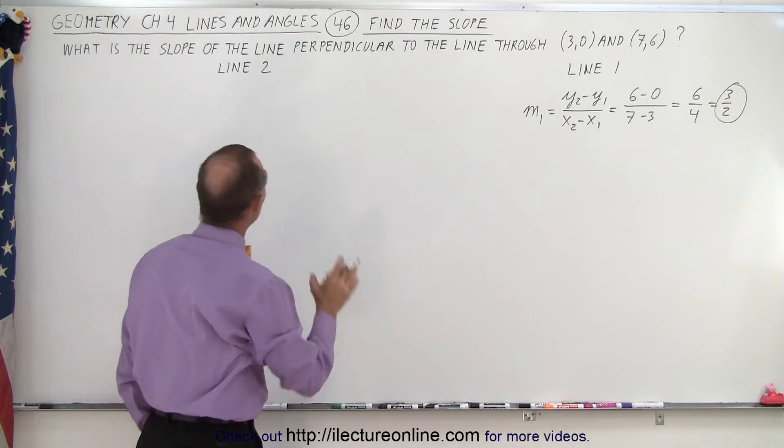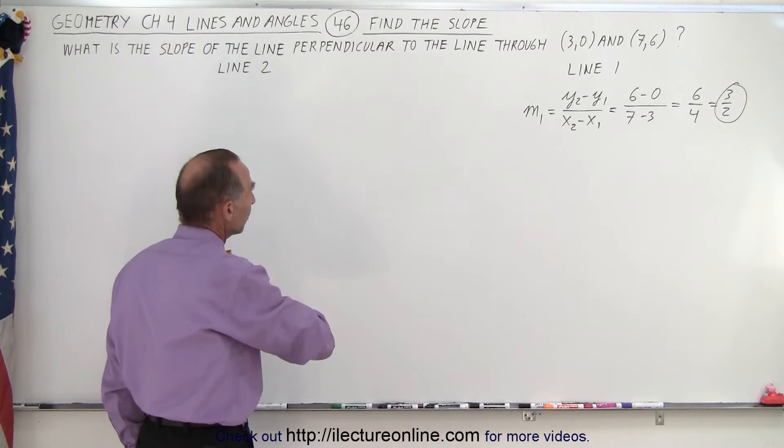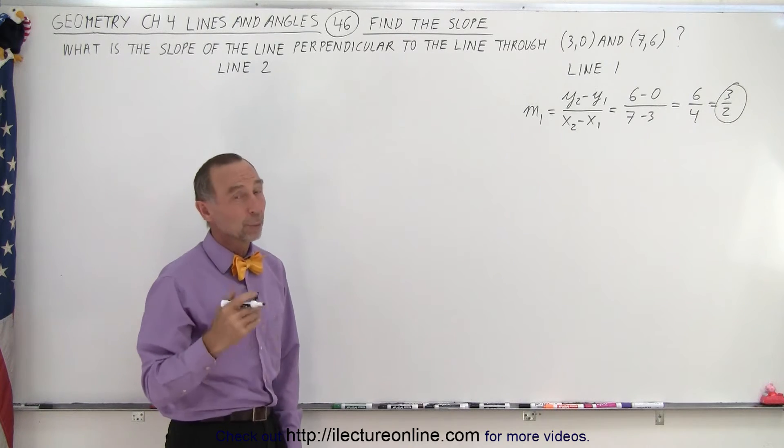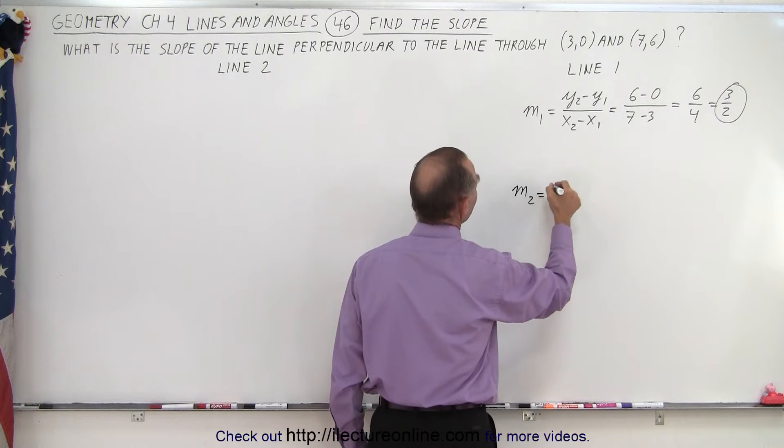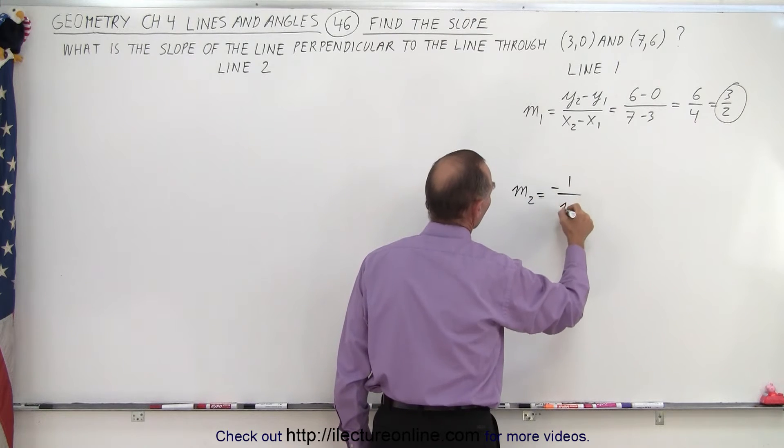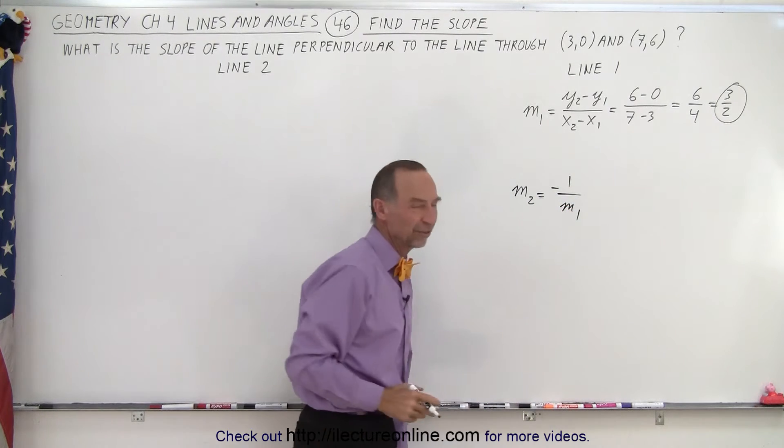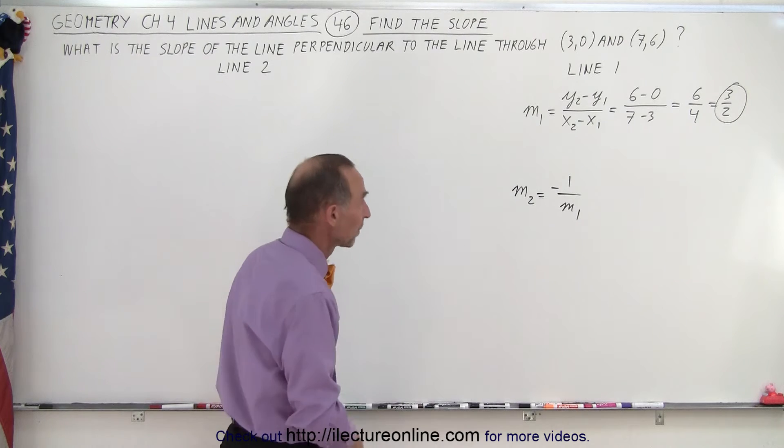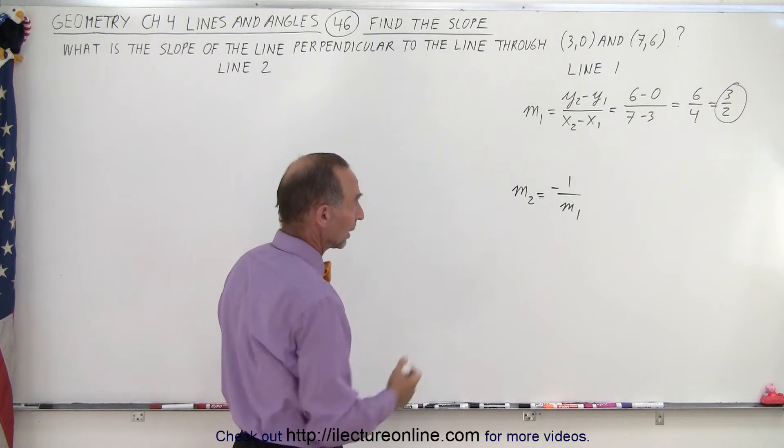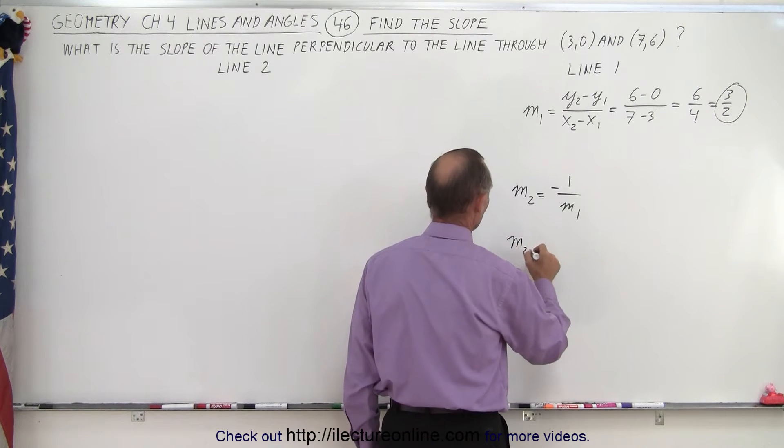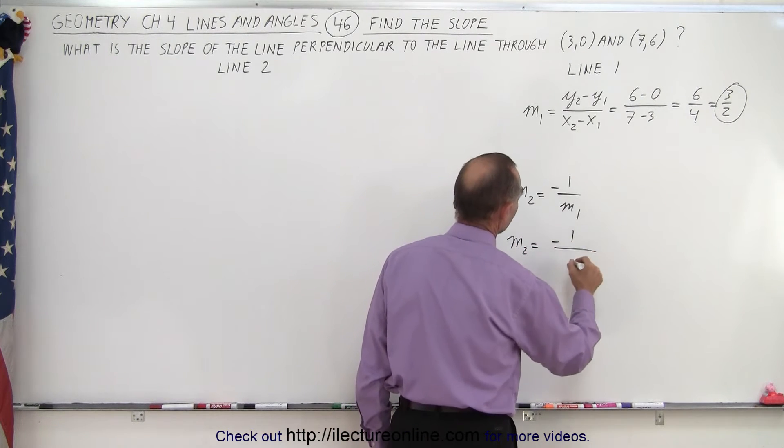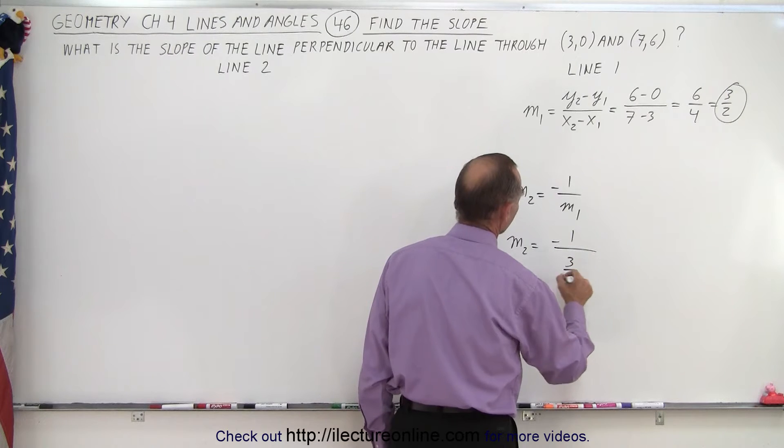So now we look for the slope of line 2 and we're told that they're perpendicular to one another, which means that slope 2, m2, is equal to the negative inverse of slope 1. So essentially minus 1 over m1. And we're given what m1 is now because we found that m1 is equal to 3 over 2. So we have m2 is equal to negative 1 divided by 3 over 2.